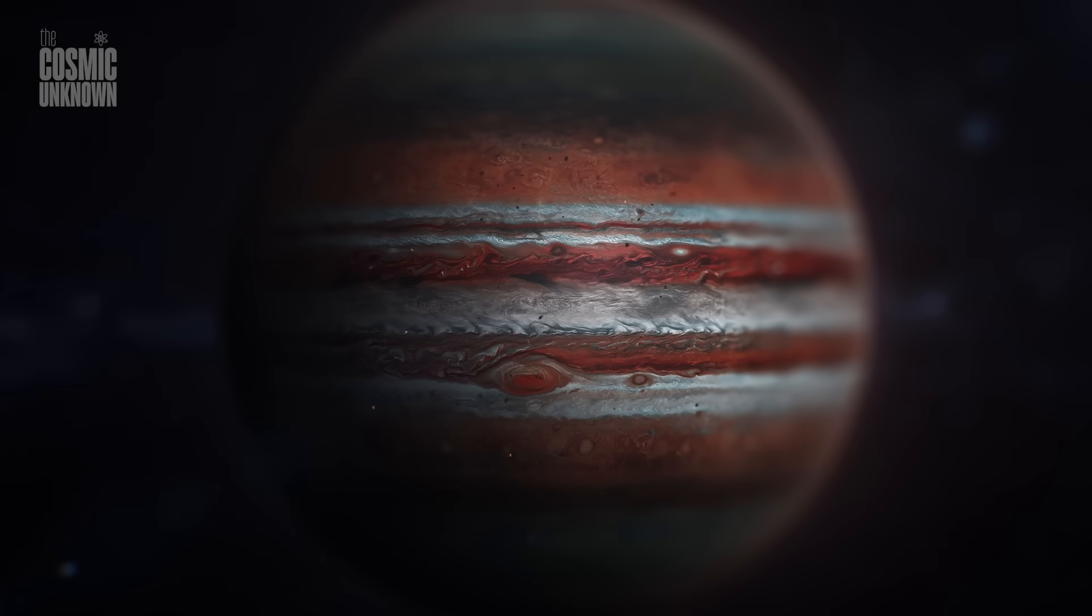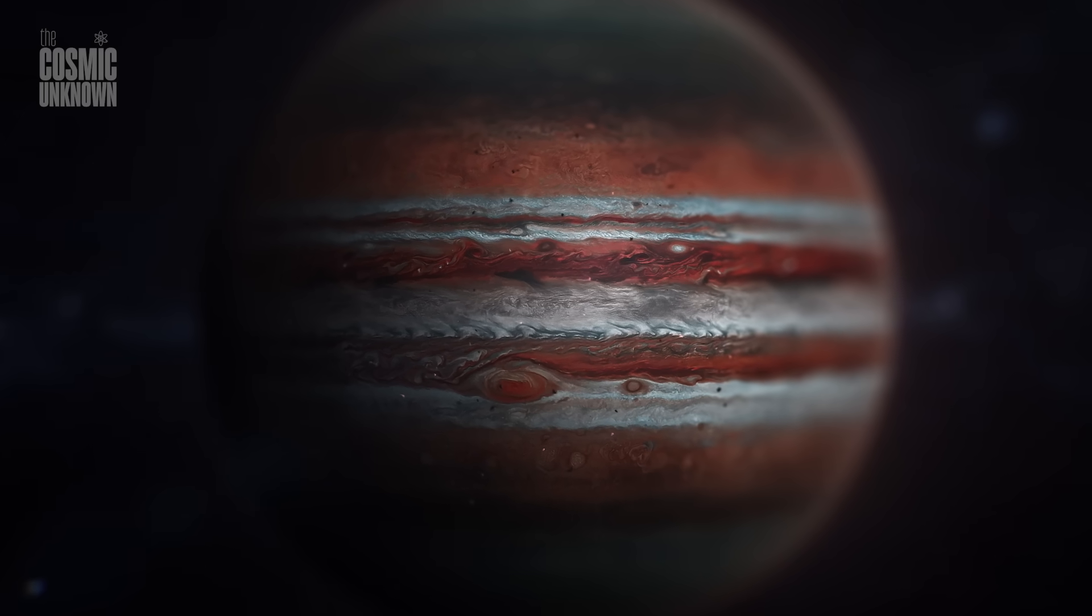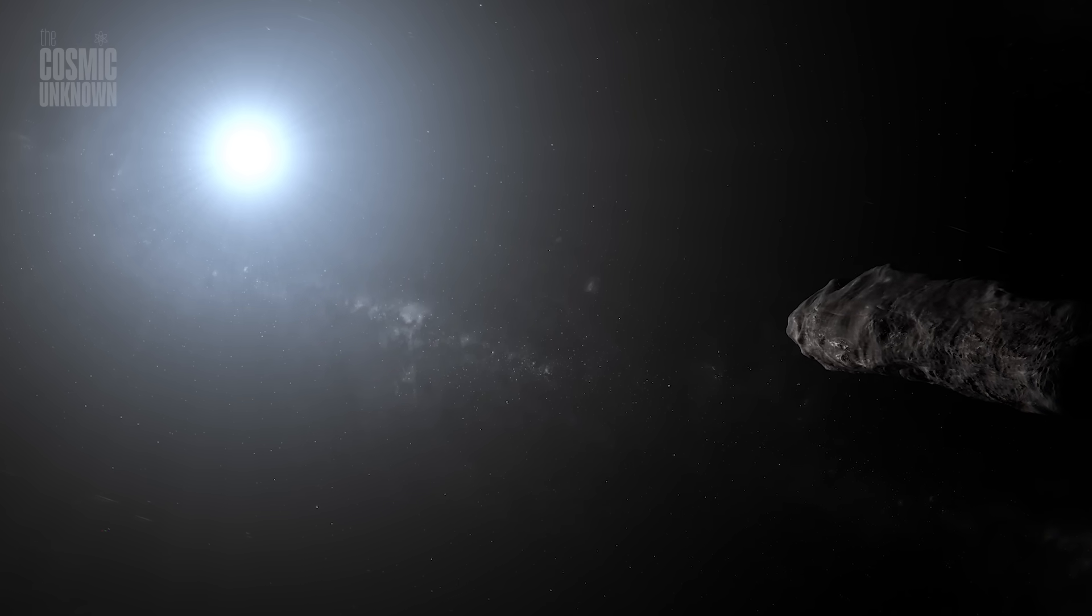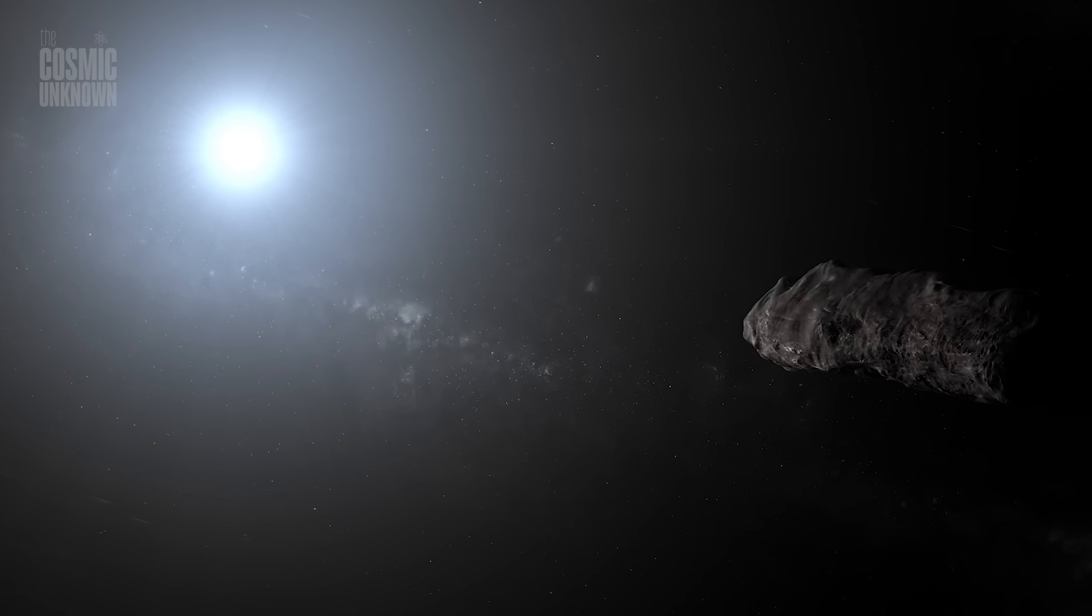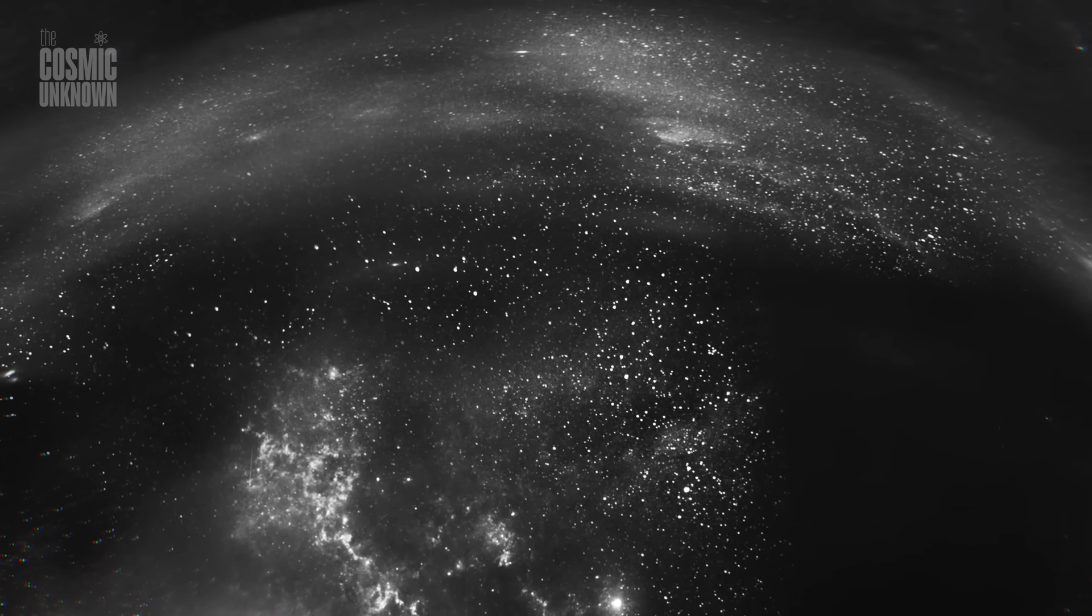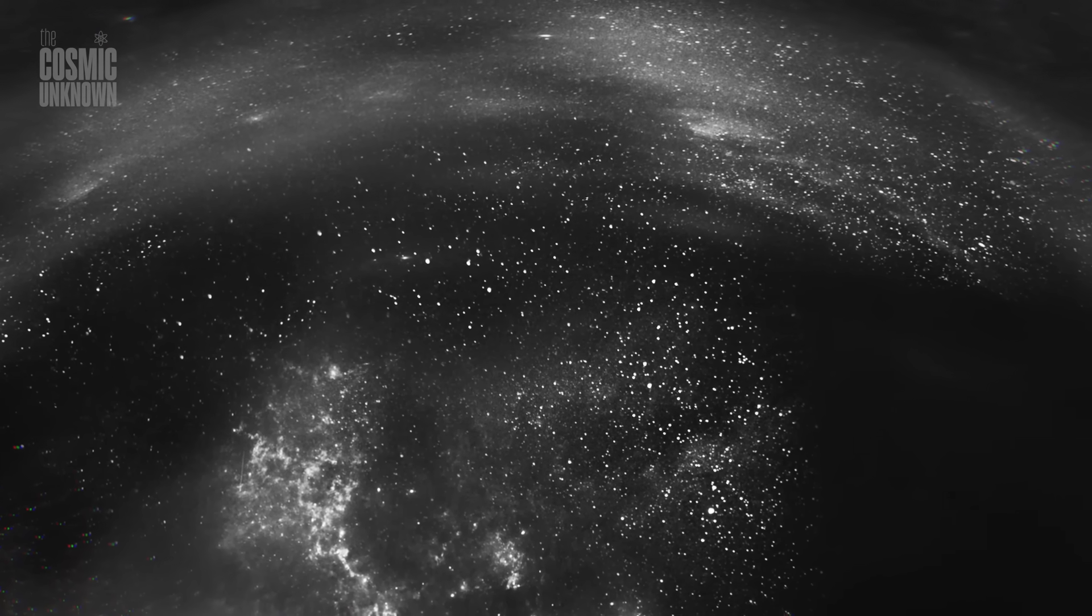At discovery, it was already inside the orbit of Jupiter, traveling at nearly 60 kilometers per second, too fast to be gravitationally bound to the sun. Its orbit is open, meaning it will pass through and never return.